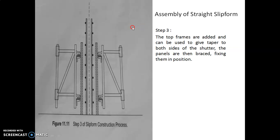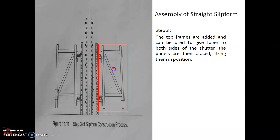In the third step, the top frames are added on both sides of the form panels or shutters. These top frames are used to give the taper to both sides, and the panels are braced and fixed into position. That is the third step of the slip form construction process.